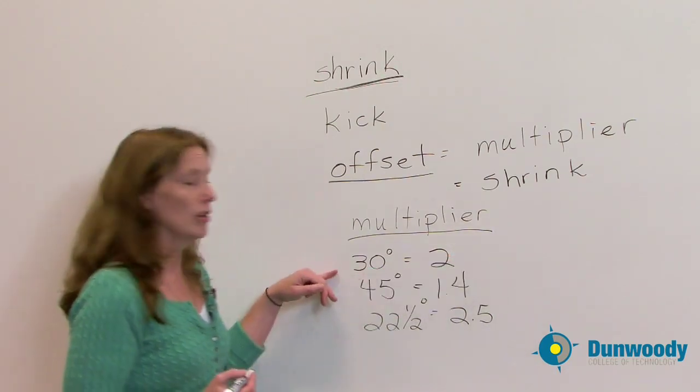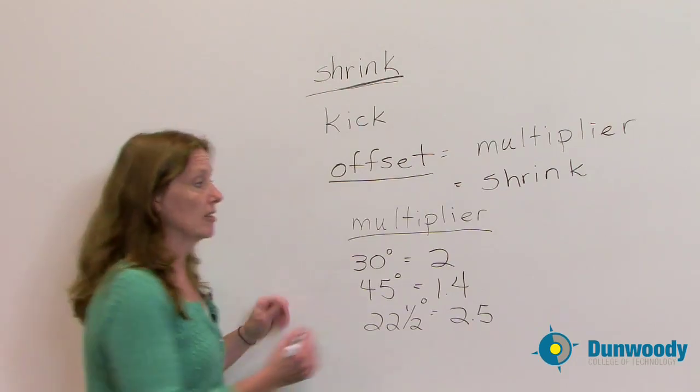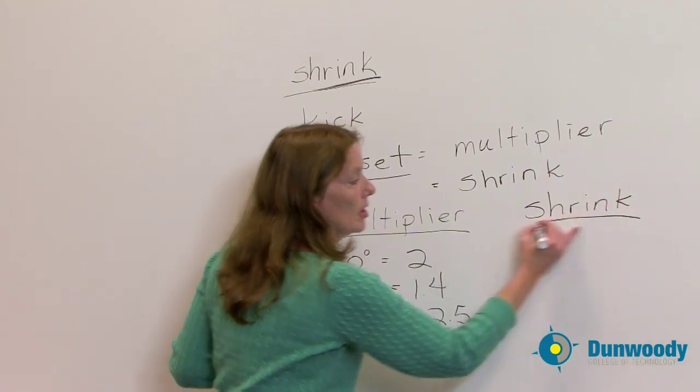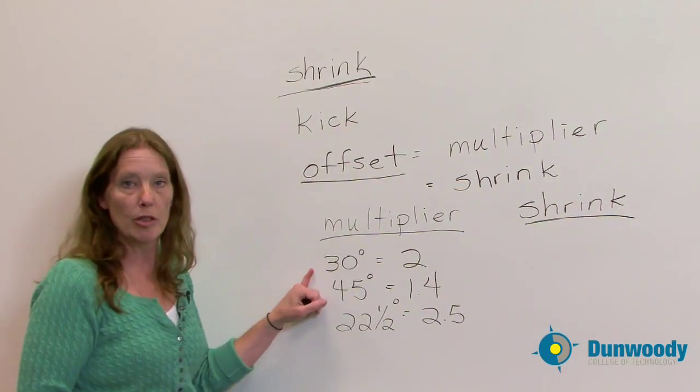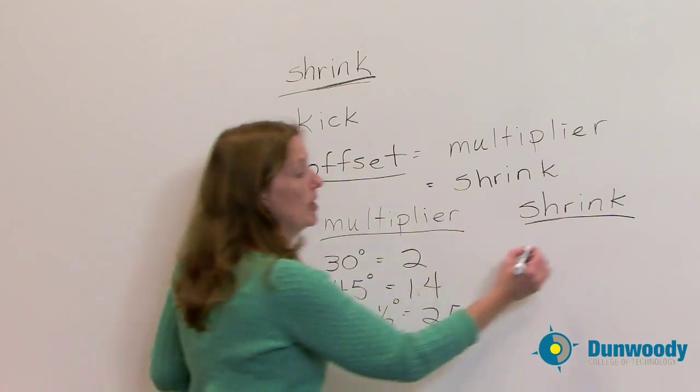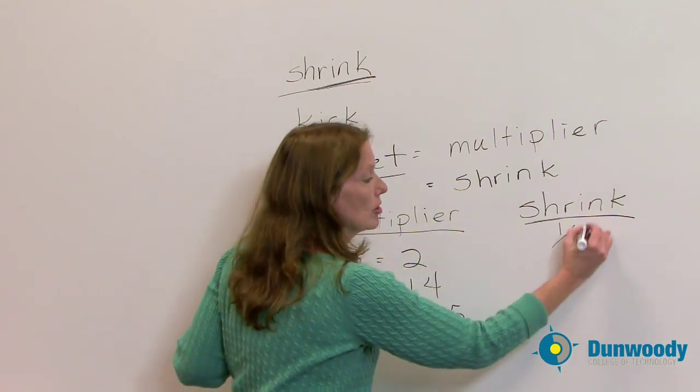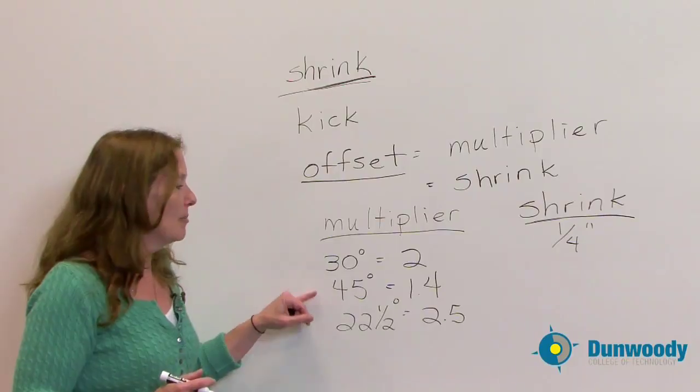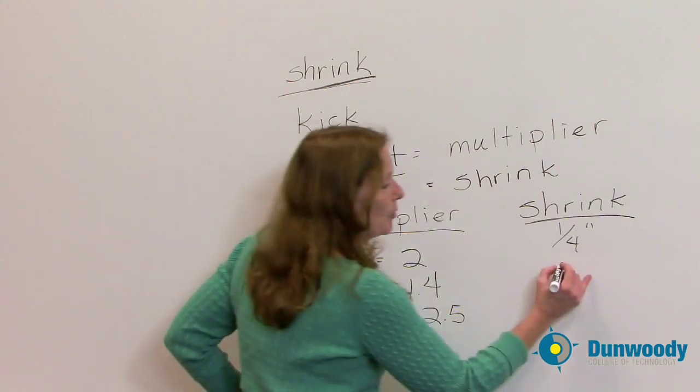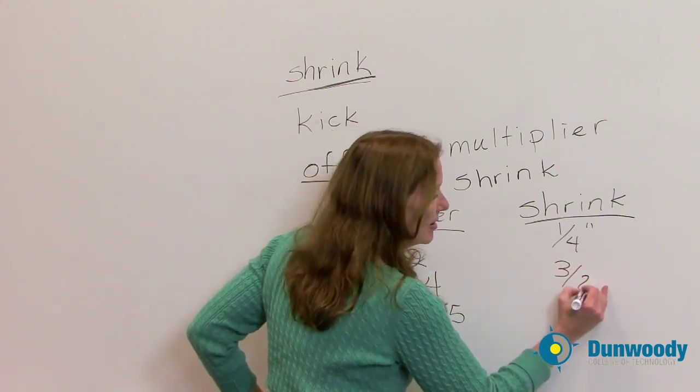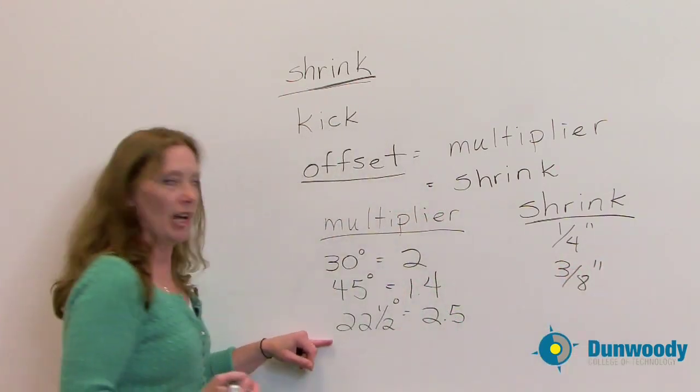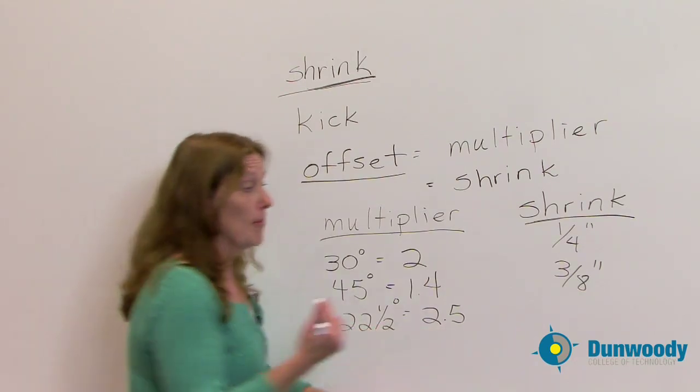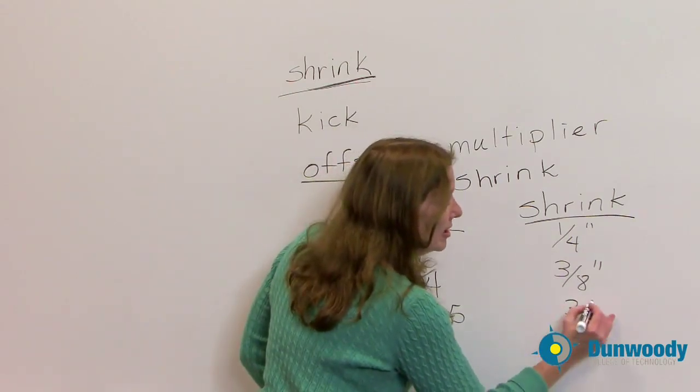My shrink goes along with these various degree markings. So if I have a 30 degree bend with a multiplier of 2, my shrink for that 30 degree bend is going to be 1 quarter inch. When I have a 45 degree bend, my multiplier is going to be 1.4. My shrink will be 3 eighths of an inch. And when I'm using a 22 and a half degree bend, my multiplier is 2.5. My shrink then is going to be 3 sixteenths of an inch.